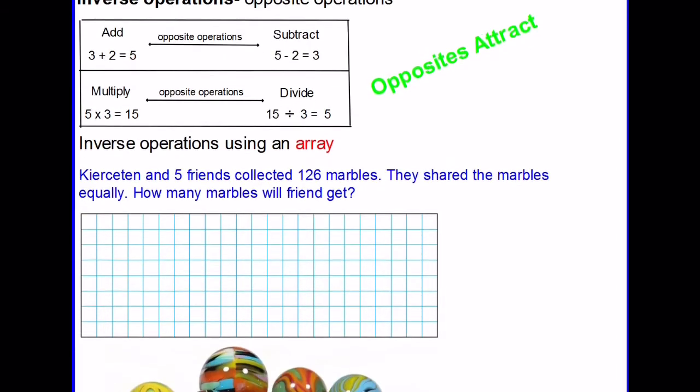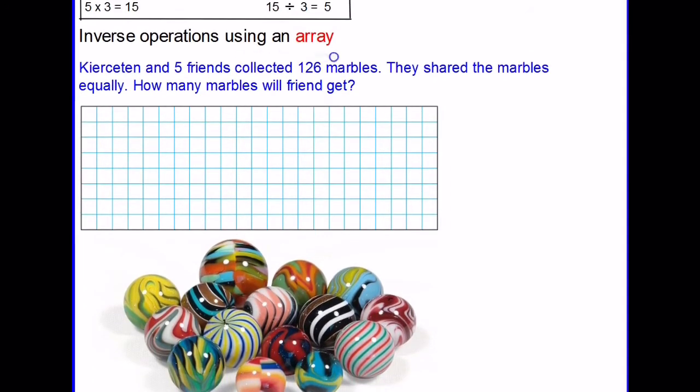Let's look at this first problem. We're going to use an array along with inverse operations to solve. Kierceton and five friends collected 126 marbles. They shared the marbles equally. How many marbles will each friend get? We want to focus on this part of the question: how many marbles will each friend get? So we have Kierceton, we have five friends, but it's Kierceton and five friends. And joins them together, so we're really talking about six friends.